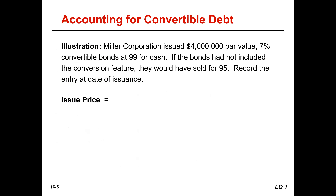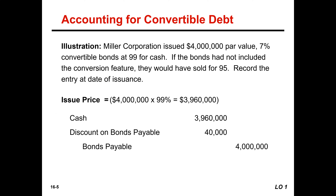Here's our example. Miller Corporation issued $4 million par value, 7% convertible bonds at 99 for cash. At 99 means 99% of par value, so $4 million times 0.99 gives us $3,960,000 in cash. If the bonds had not included the conversion feature, they would have sold at 95% of par. The journal entry debits cash for the issue price, debits discount on bonds payable, and credits bonds payable.